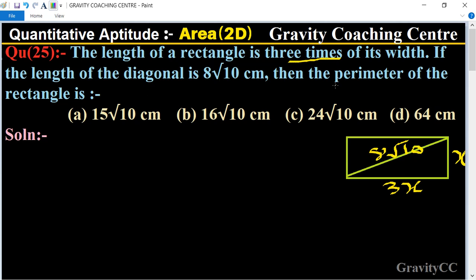So then, what is the perimeter of the rectangle? We use the Pythagoras theorem in this triangle, so it will become (3x)² + x² = (8√10)².